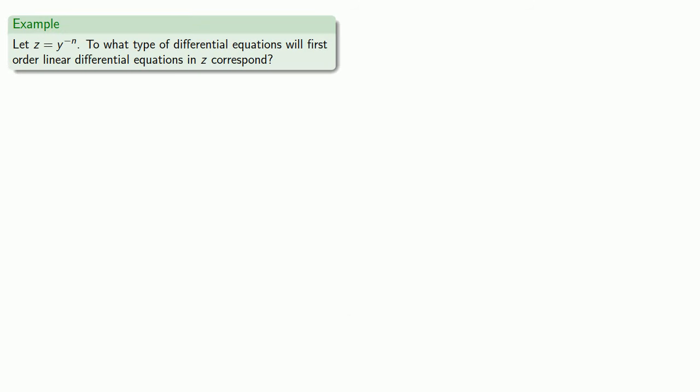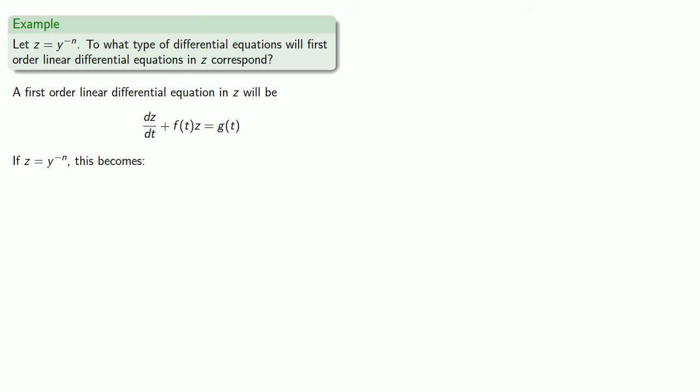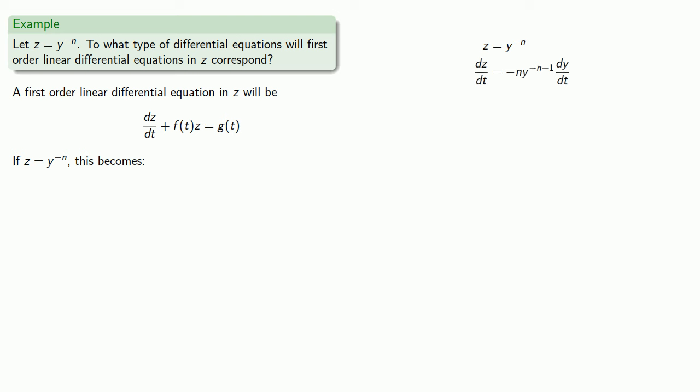Let's answer the question: let z equal y to the minus n. A first-order linear differential equation in z is dz/dt plus some function of t times z equals some function of t. Making the substitution z equals y to the power minus n, we also need to substitute dz/dt. So if z equals y to the power minus n, then dz/dt can be found by the chain rule. Then we replace dz/dt and z in our original differential equation with what they equal.